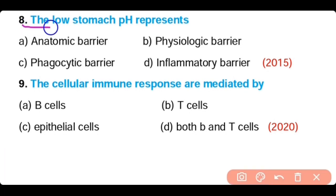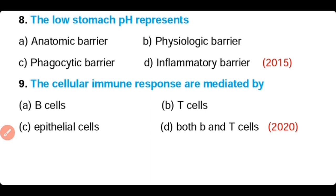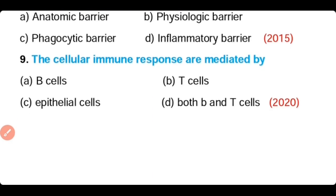Question number 8. The low stomach pH represents: anatomic barrier, physiological barrier, phagocytic barrier, or inflammatory barrier. The correct answer is Option B. The low pH of the stomach represents the physiological barrier.